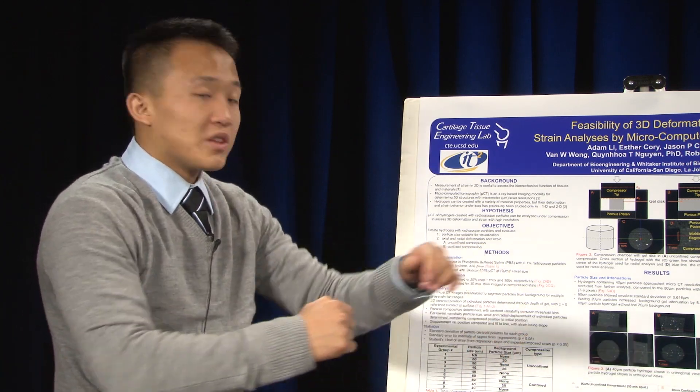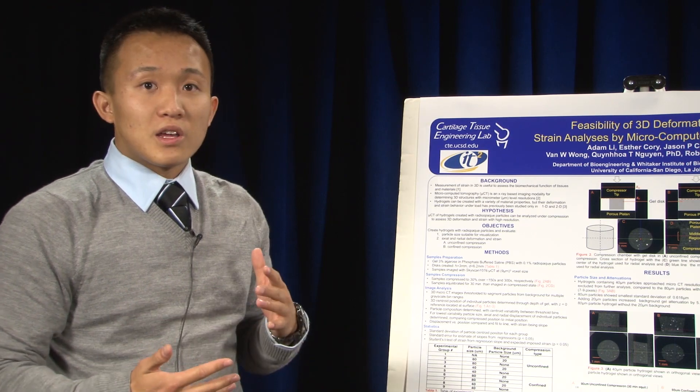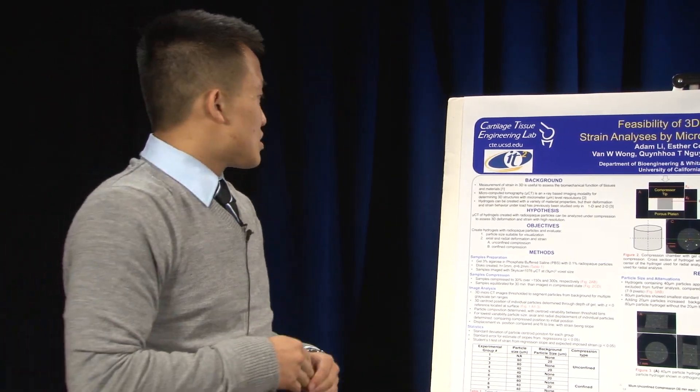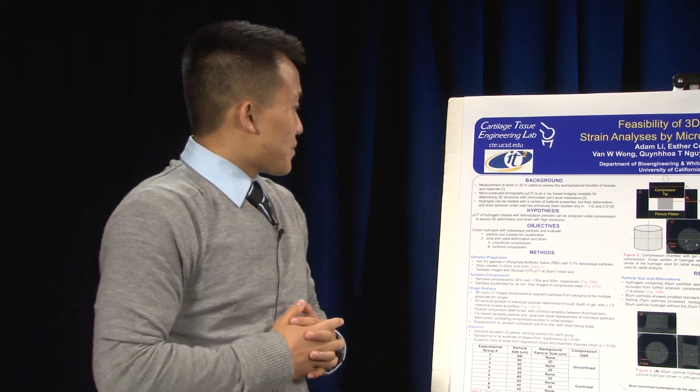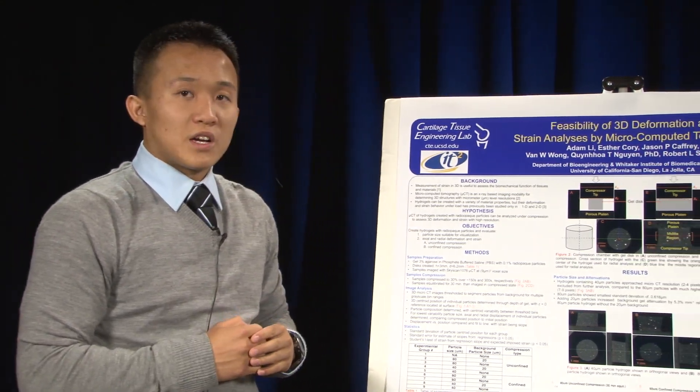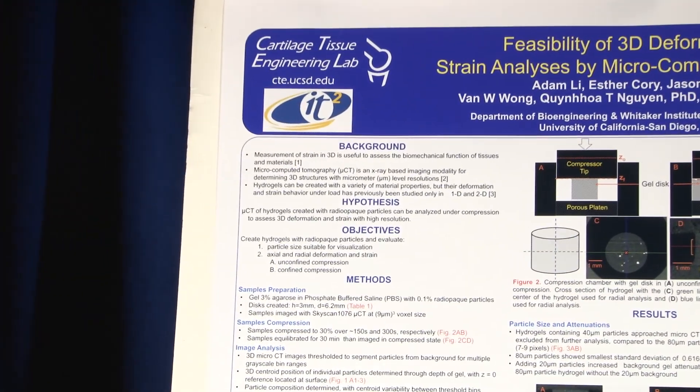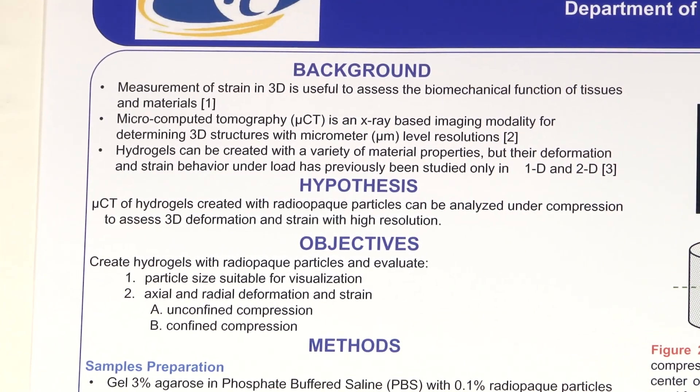Now hydrogels are really important to this study as well. Hydrogels can be created with a variety of different material properties, but previously they've only been studied in 1D and 2D. Our hypothesis here is basically that the microCT of hydrogels created with radio opaque particles can be analyzed under compression to assess 3D deformation and strain with high resolution.